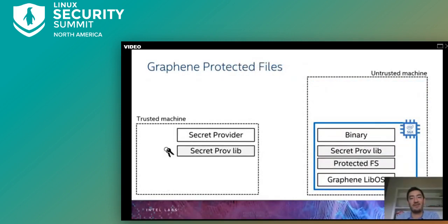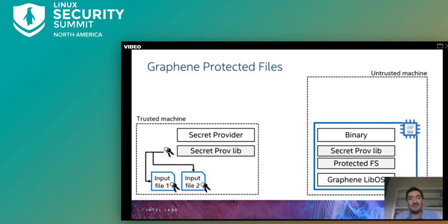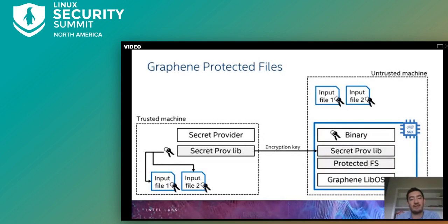Graphene also implements protected files. Since the user application runs on an untrusted machine, all input and output files must be at least integrity-protected, and if they contain sensitive information, they must also be encrypted. With the protected file system in Graphene, all required files are created by the user on her trusted premises first, then encrypted with a symmetric key, and shipped to the untrusted machine together with the application binary and Graphene. After the SGX enclave is created, Graphene obtains the encryption key via secret provisioning with remote attestation, then uses it to decrypt the input files and run the workload.